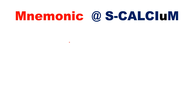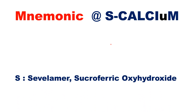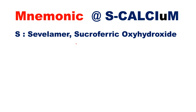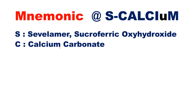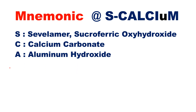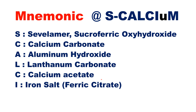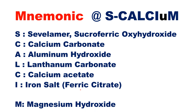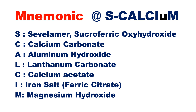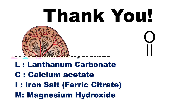The easy mnemonic to remember all these phosphate binders is SCALCIM: S is for sevelamer, C is for calcium carbonate, A is for aluminum hydroxide, L is for lanthanum carbonate, C is for calcium acetate, I is for iron salts like ferric citrate, and M is for magnesium hydroxide.